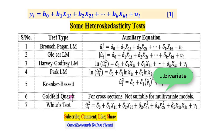Next we move to White. For White, you use the squared residuals and regress them on the independent variables, the squared independent variables, and their cross terms.